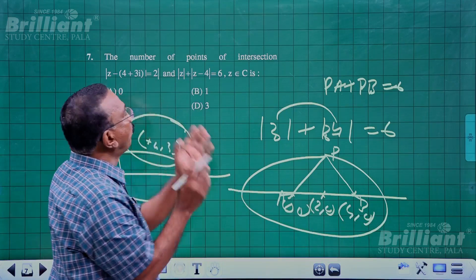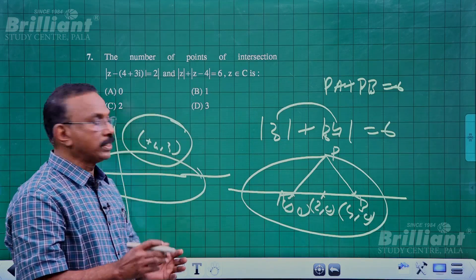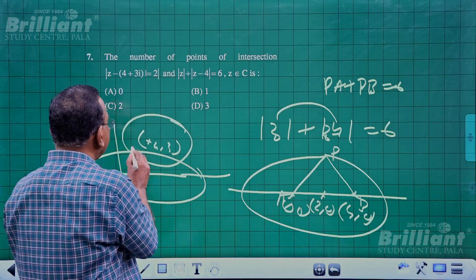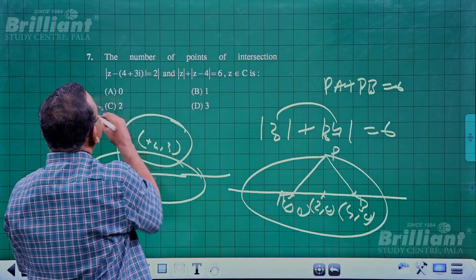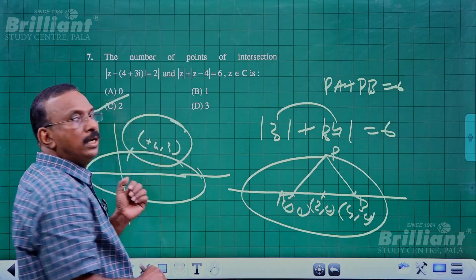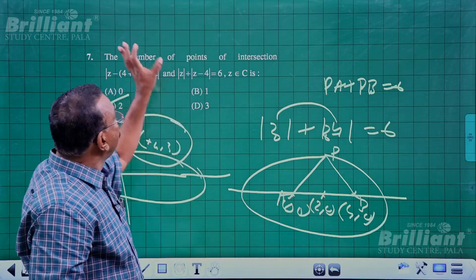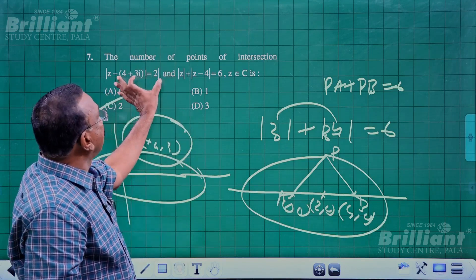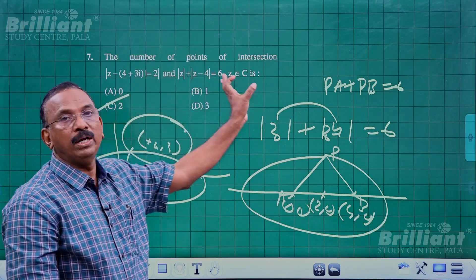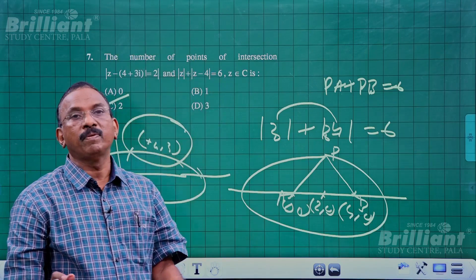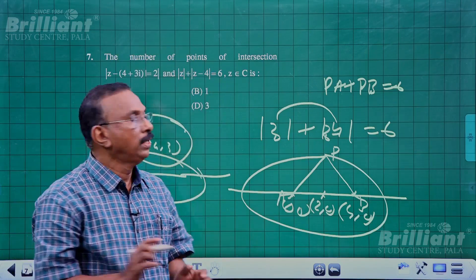We want to find the common points of intersection between the circle and the ellipse. Drawing both curves, they intersect at 2 points. So option C is correct.